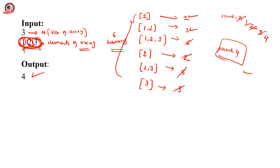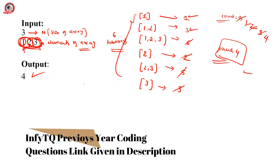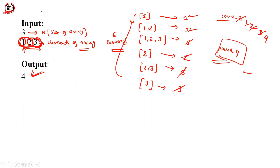The approach is simple: generate all possible subarrays, find the sum of each subarray, and check whether that sum is odd. If the sum is odd, increment the count; otherwise ignore it. After iterating through all subarrays, print the current value of count.